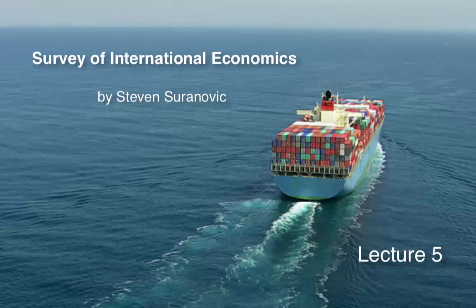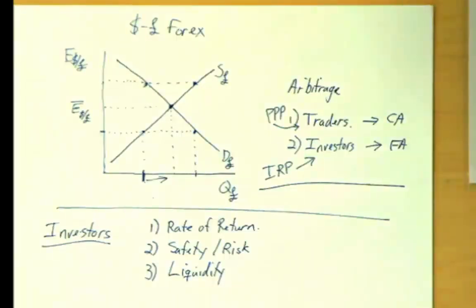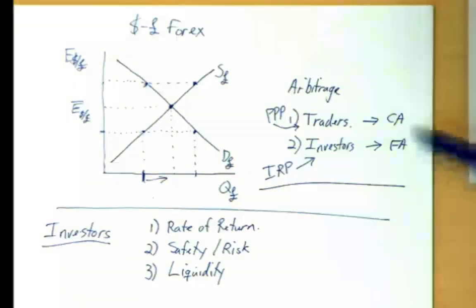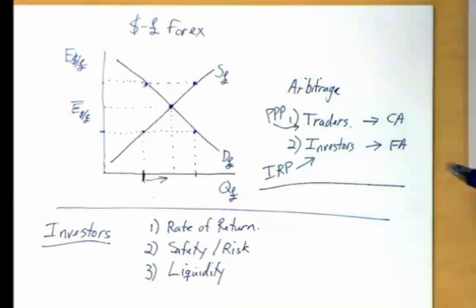The topic today is the interest rate parity theory. This is what we finished up with last time in class. Our point and purpose in this lecture and the next is to talk about how exchange rates are determined in a floating exchange rate system. We talk about two different major classes of participants in the foreign exchange market.